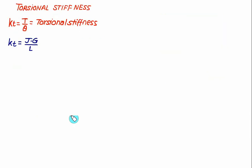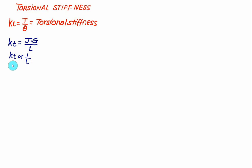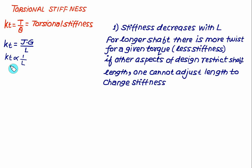Torsional stiffness KT = T/θ = JG/L, so KT is inversely proportional to length L. A smaller length gives higher torsional stiffness and a smaller twist angle; a larger length gives lower stiffness and larger twist angle. For a longer shaft there is more twist for a given torque. If design restricts the shaft length, one cannot adjust L to change stiffness, and must instead adjust J or G.